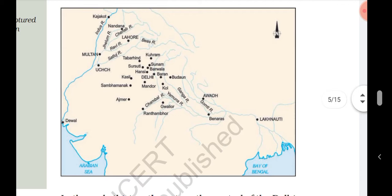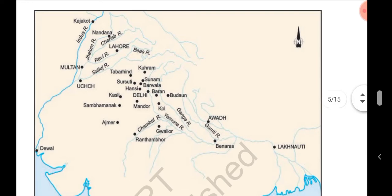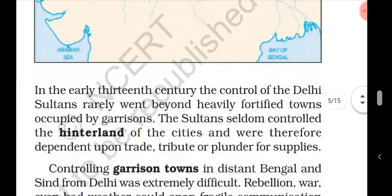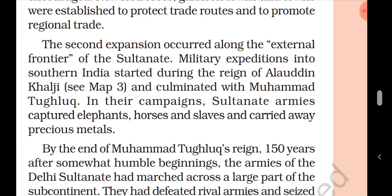The Sultan barely survived these challenges, and consolidation occurred during the reign of Ghiyasuddin Balban and further expansion under Alauddin Khilji. In this map you can see the areas where these sultans ruled — from Kajjak, Multan, Luch, Mandana, Tabarhind, Sushuti, Mandor, Ranthambore, Banaras, Awadh, and Lakhnauti. You have to draw this map in your notebook. Military expeditions into southern India started during the reign of Alauddin Khilji, which greatly increased his military power.